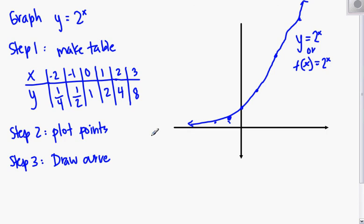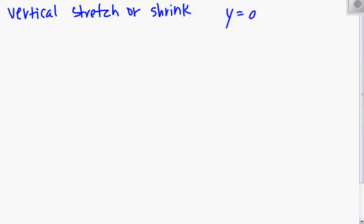So that's how we graph y equals b to the x. Let's look at if we have a vertical stretch or shrink in regards to our graph. So remember, vertical stretch or shrink is when we're multiplying y equals a b to the x. So now we have something in front of our b to the x. So let's start with y equals 1 one half times 4 to the x power.